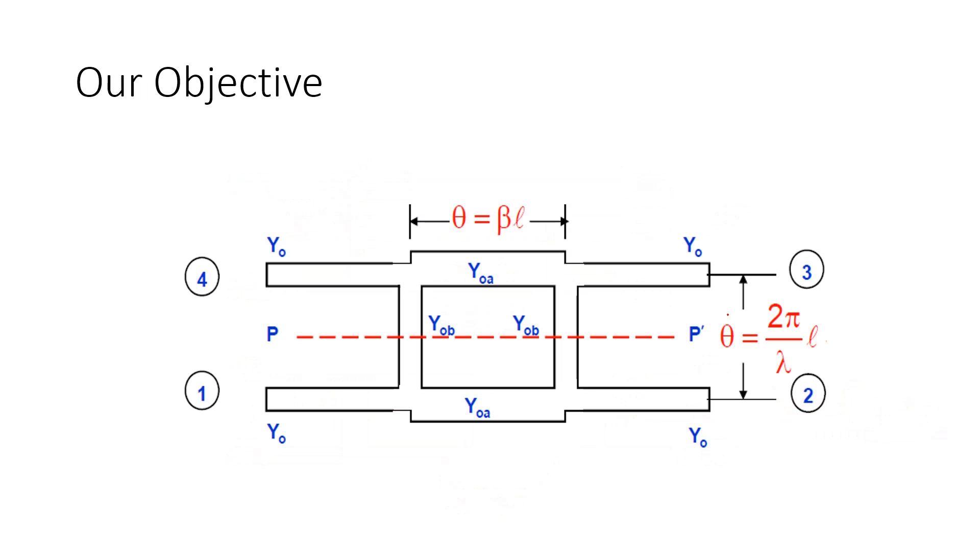This is our objective, to design this BLC. You might have seen this type of structure in our slide one, where I am showing you how I have fabricated it. We have many variables here: one variable is Yoa, another variable is Yob, another is theta, another is Yo. These are actually denoting your characteristic admittance.